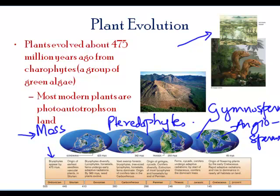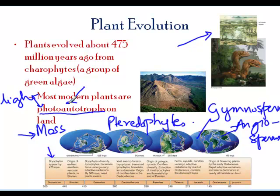What all of these plants have in common is that they are photoautotrophs. Photo means they depend on light, and auto means self — they are self-producing in terms of food. So they actually synthesize their own food, which is because they have chlorophyll in them.